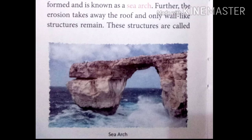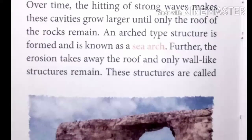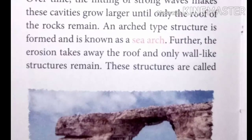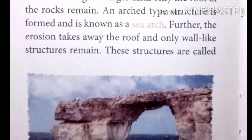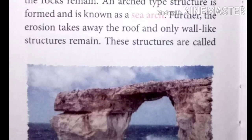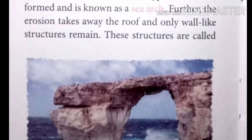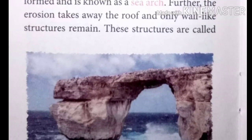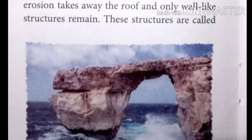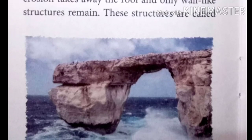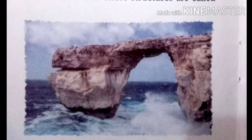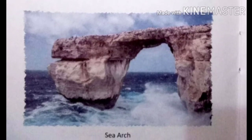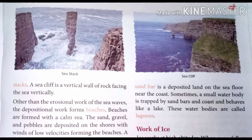Other than the erosional work of sea waves, the deposition process forms beaches. Beaches are formed with a calm sea — when the sea is not turbulent, a deposition process occurs. The eroded materials like sand, gravel, and pebbles are deposited on the shores with winds of low velocities, forming the beaches.